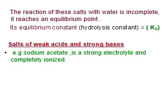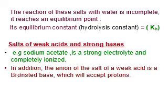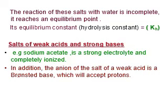Salts of weak acids and strong bases — a very famous example is sodium acetate. Sodium acetate comes from the reaction of sodium hydroxide, a strong base, with acetic acid, a weak acid. It is a strong electrolyte and it is completely ionized — 100% ionized. In addition, the anion of the salt of a weak acid is a Brønsted base, which will accept protons.